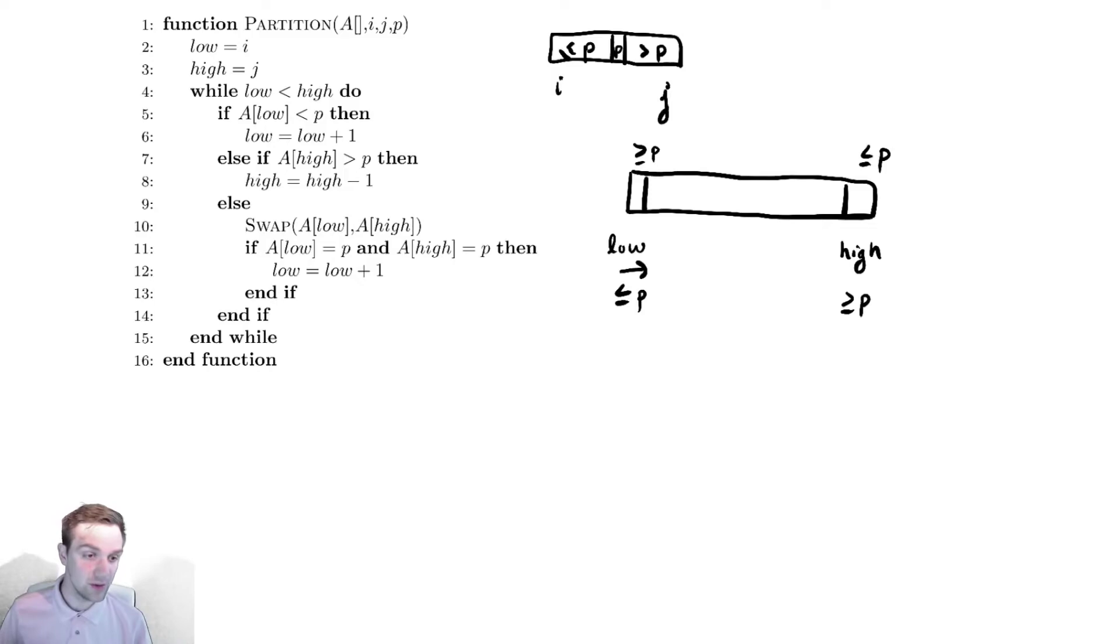So if we do this, after we've executed that code, one of those values will either be less than p or greater than p, or we will have executed the if statement that executes only if they are both equal to p. So it cannot be the case that we have both elements out of order. We are guaranteed that after we perform the swap, on the next iteration of this while loop, we will execute one of those two if statements—the if or the else if.